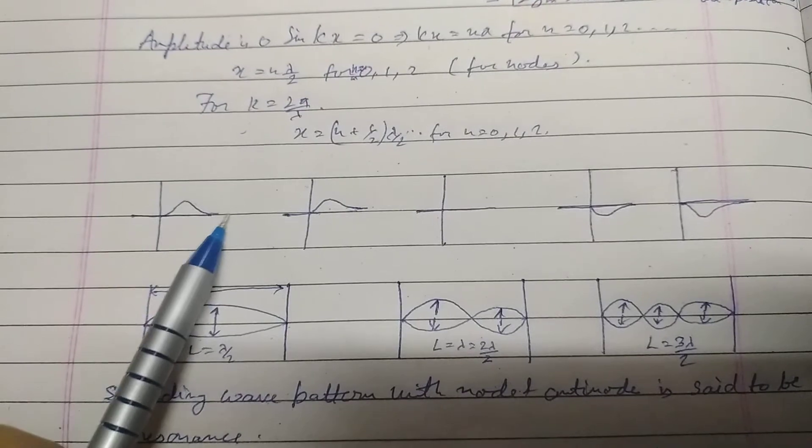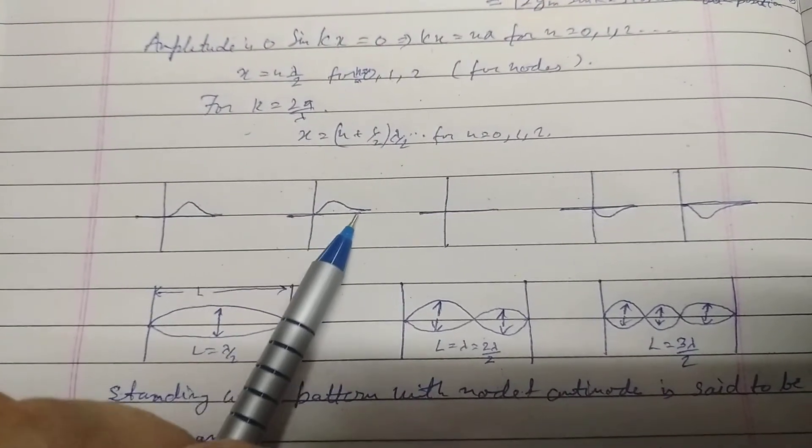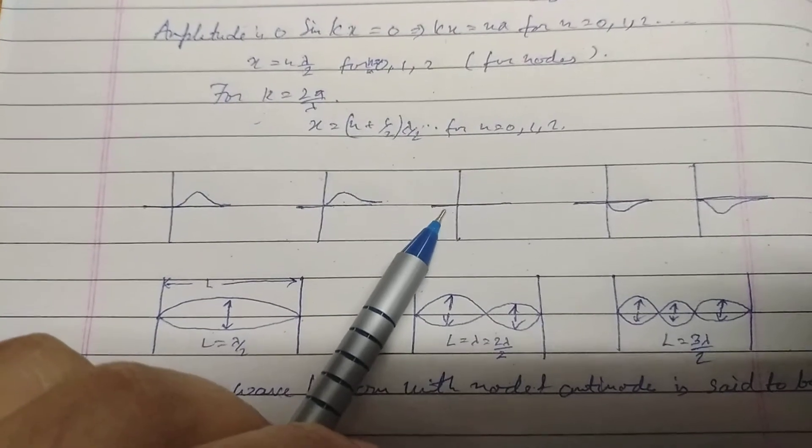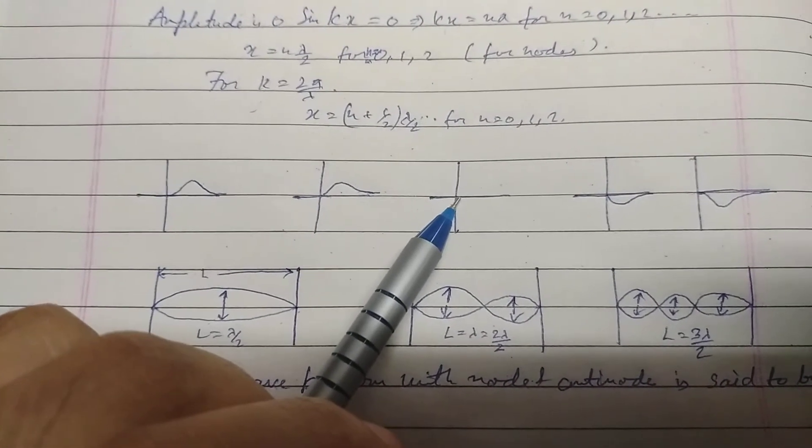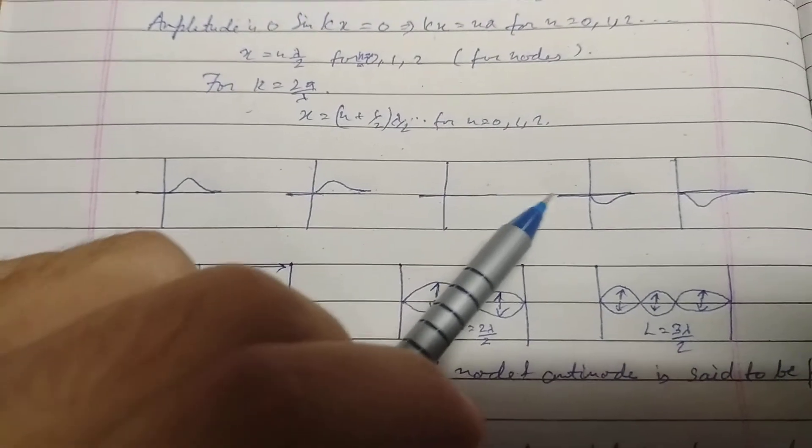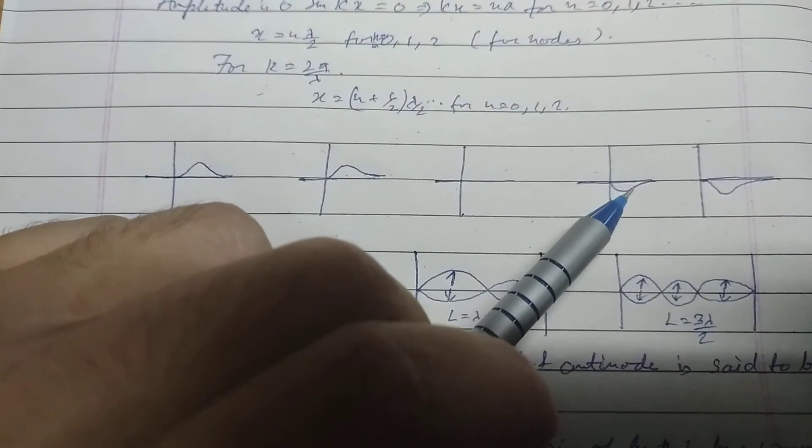As the wave moves towards the left, it exerts a force on the strand of string, and the strand of string by Newton's third law exerts a force equal and in opposite direction, first forming the flat string and then the wave with displacement in opposite direction moving towards the right.